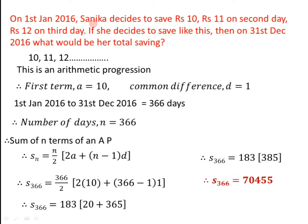Therefore, Sanika's total savings in that year will be Rs 70,455. To find this, we used the formula for sum of N terms of an AP, that is Sn. Thank you.